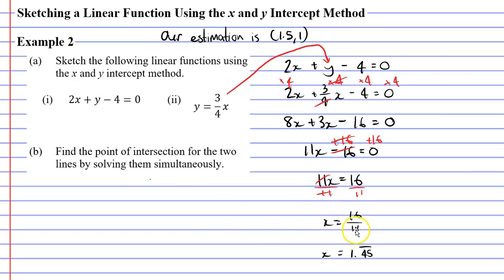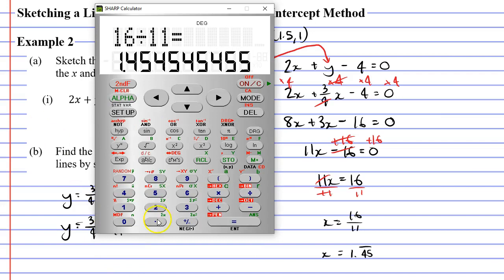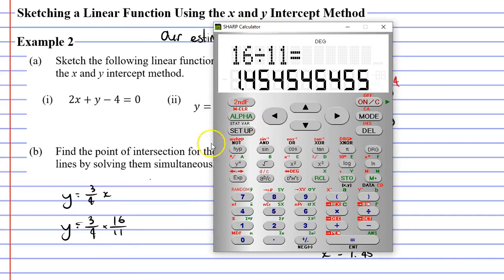So when x equals 16/11, what does y equal? In order to find y you can pick either of the two equations. Out of the two I think the second equation would be the better pick. I'm going to take y equals 3/4 x and substitute 16/11 in place of x. This will give me y equals 3/4 times 16/11. To save myself some time I'm going to use the calculator.